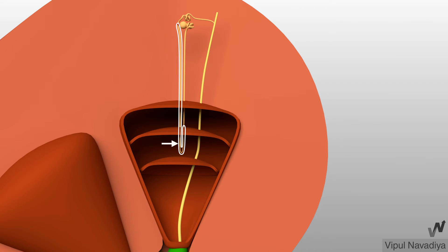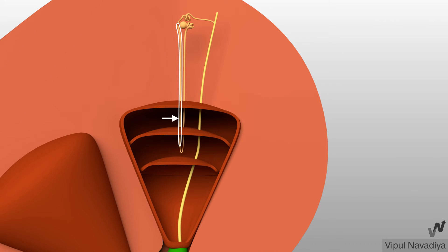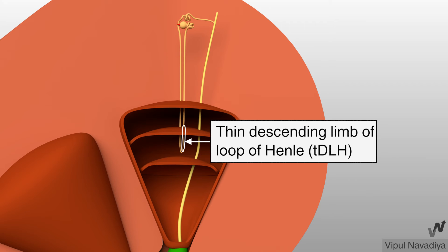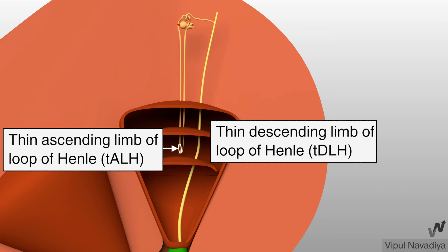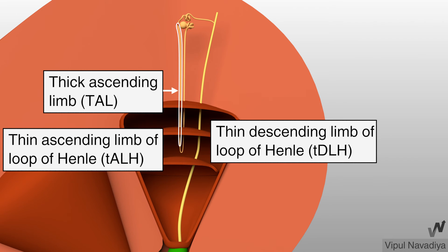The next part is the loop of Henle. It has two limbs: a descending limb going up to the junction of the outer and inner medulla, and an ascending limb coming back towards the cortex. The loop can also be divided into a thin segment and thick segment. The cells of the thin segment are thin with very few microvilli and mitochondria, while cells of the thick segment are thick with more microvilli and mitochondria. The descending limb is entirely thin, so it is also called the thin descending limb of the loop of Henle. The ascending limb has both portions: the thin portion is called the thin ascending limb, and the thick portion is called the thick ascending limb.